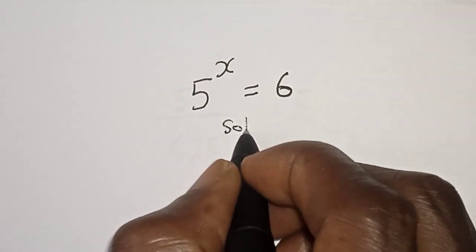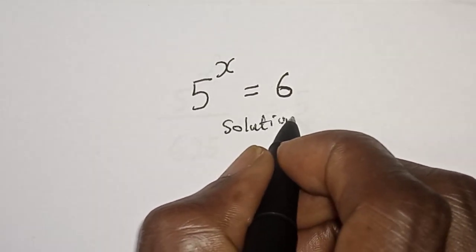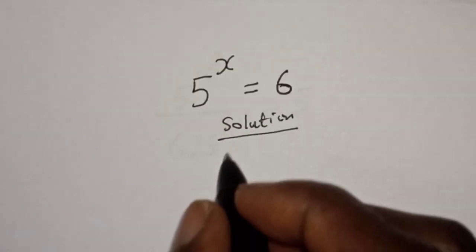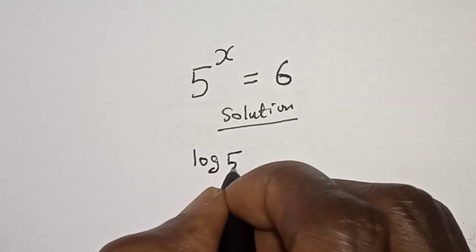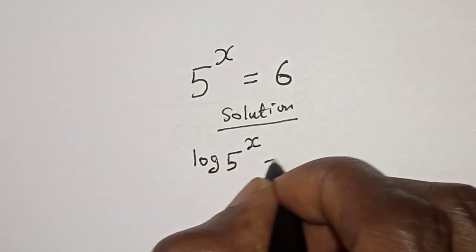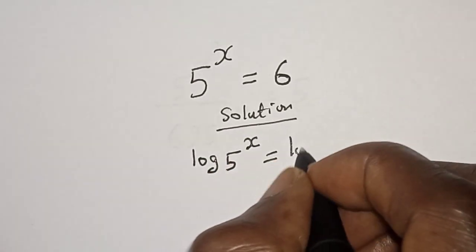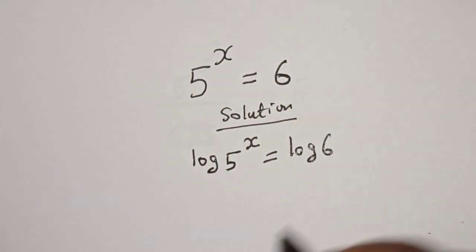Solution. Let's take the log of both sides. Log 5 raised to power s is equal to log 6.